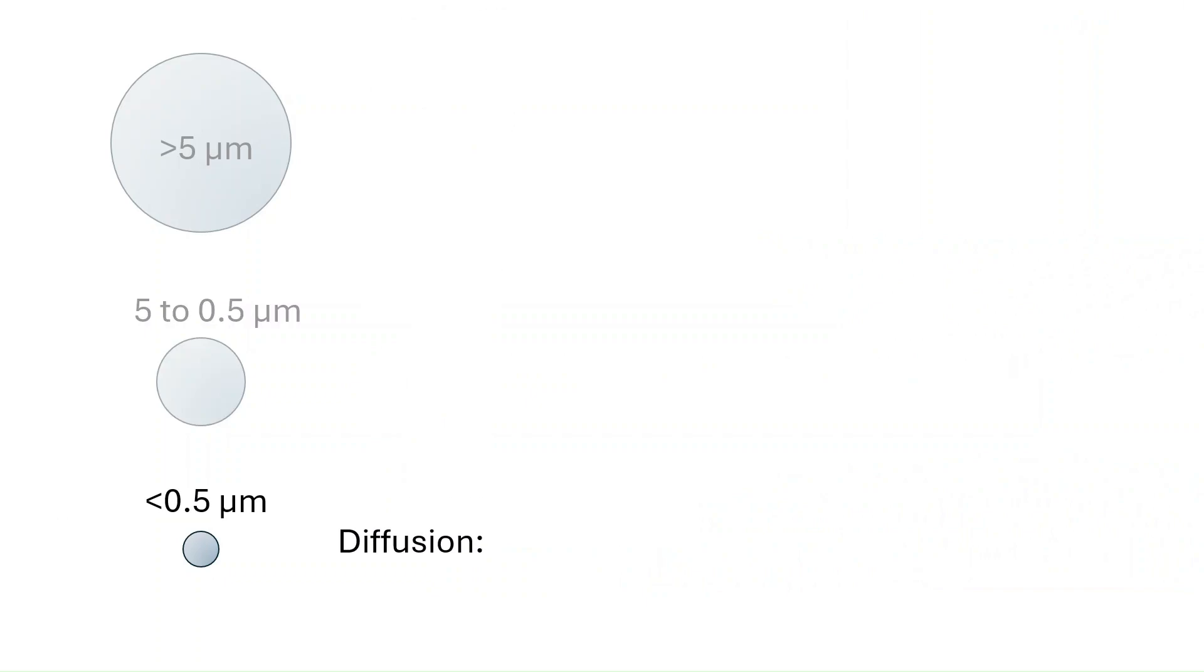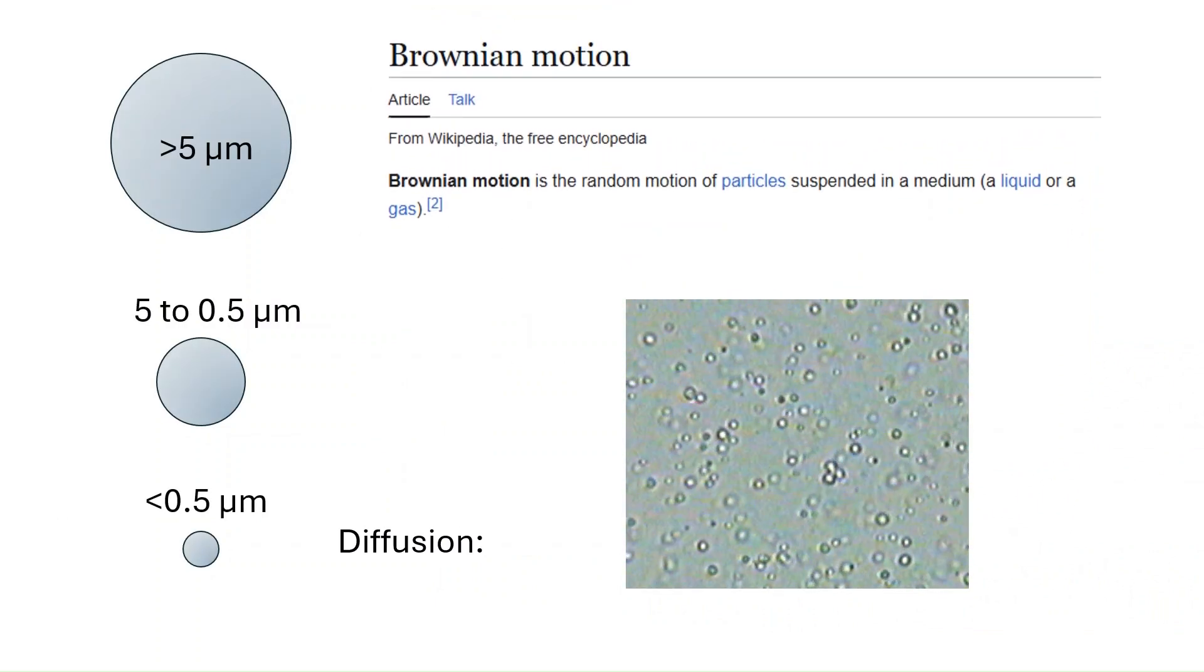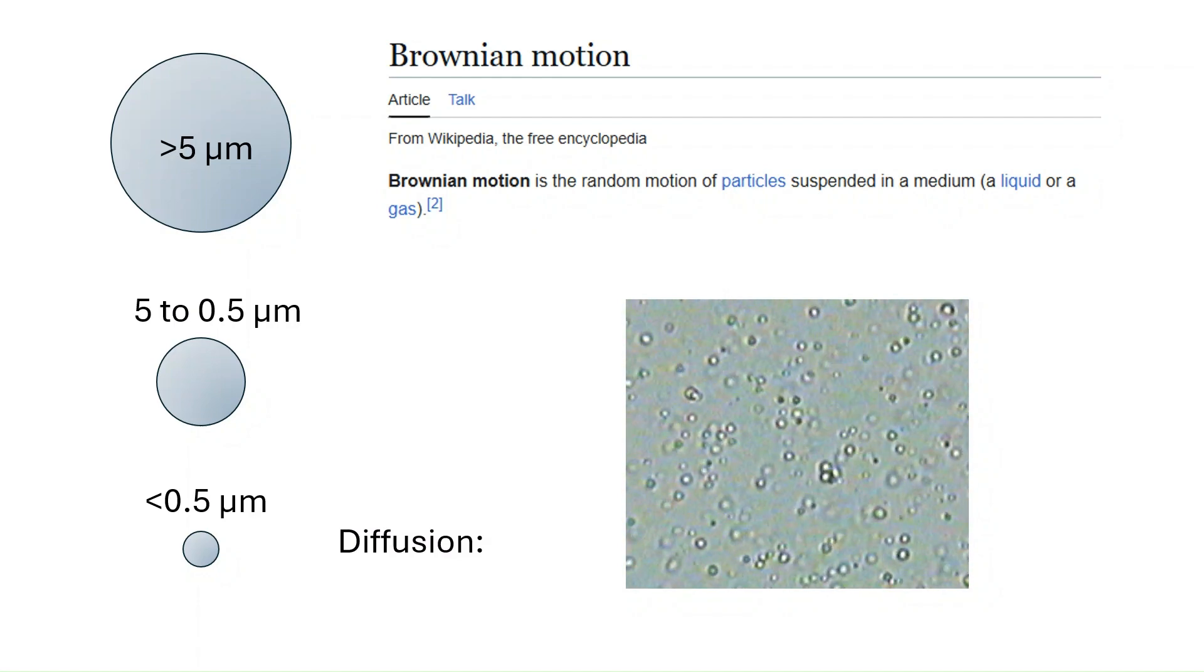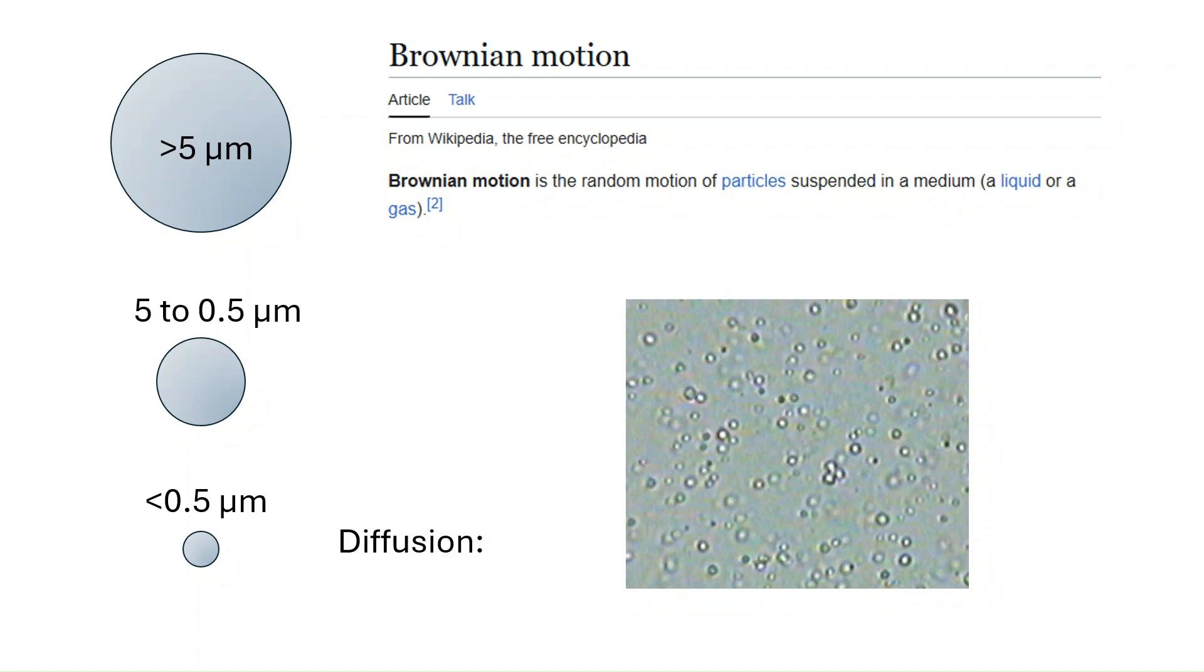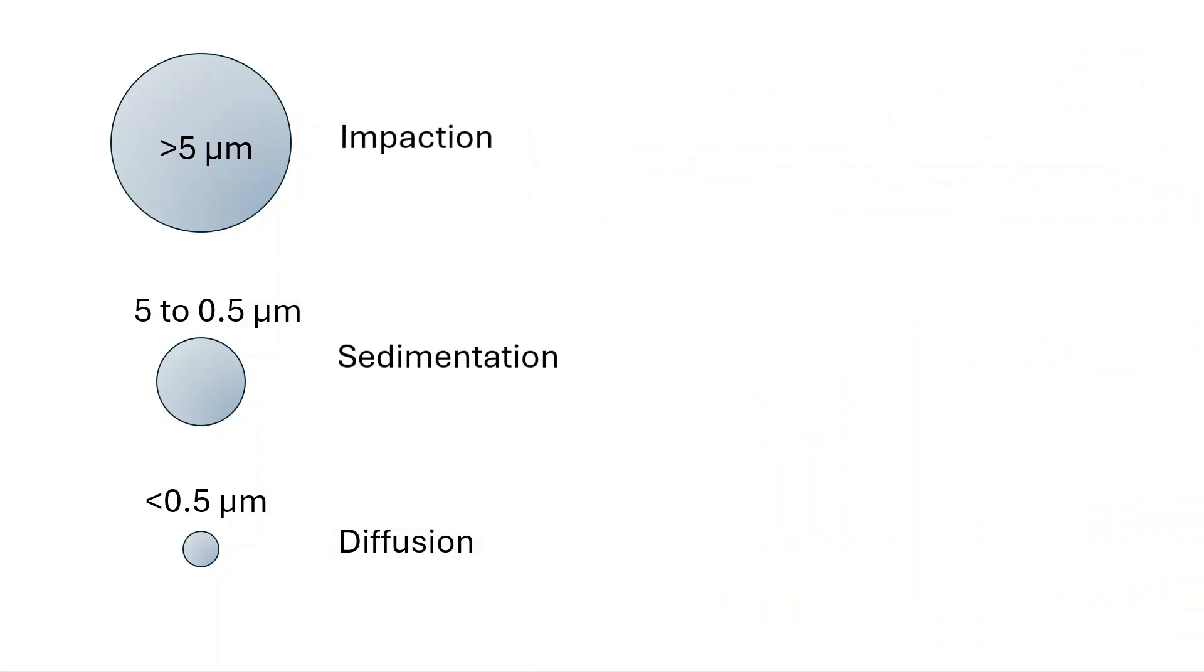So for aerosol under about 0.5 microns, sedimentation is not a factor as the aerosol are so small, the forces that drive sedimentation are not enough to cause the particles to deposit. Now aerosol under about 0.5 microns are deposited in the airway via diffusion. Very small aerosol move randomly in the air. Termed Brownian motion, it's this random motion that causes these tiny particles to come into contact with the airways and deposit. The majority of the aerosol that deposits by diffusion will do so deep within the lungs.